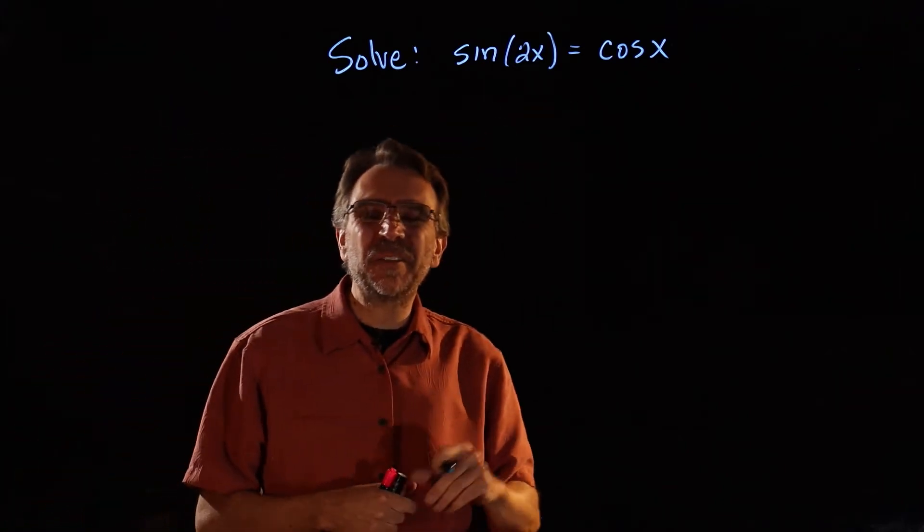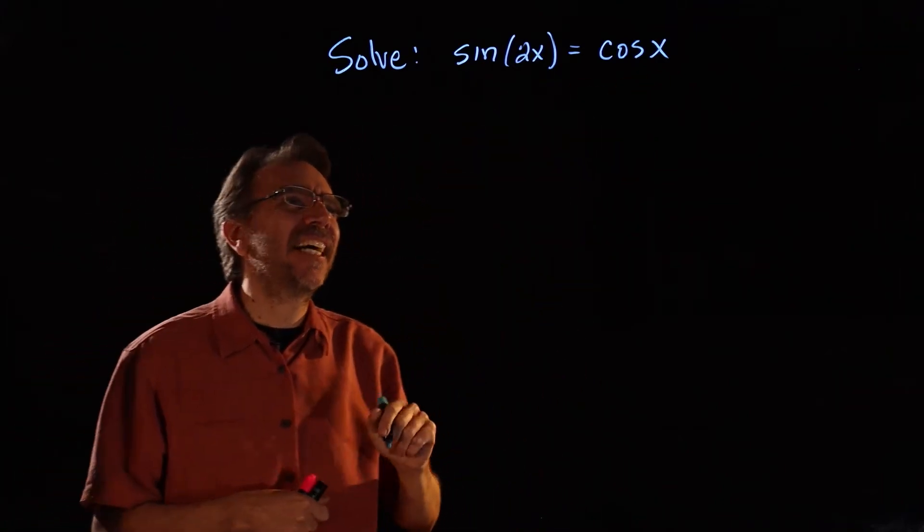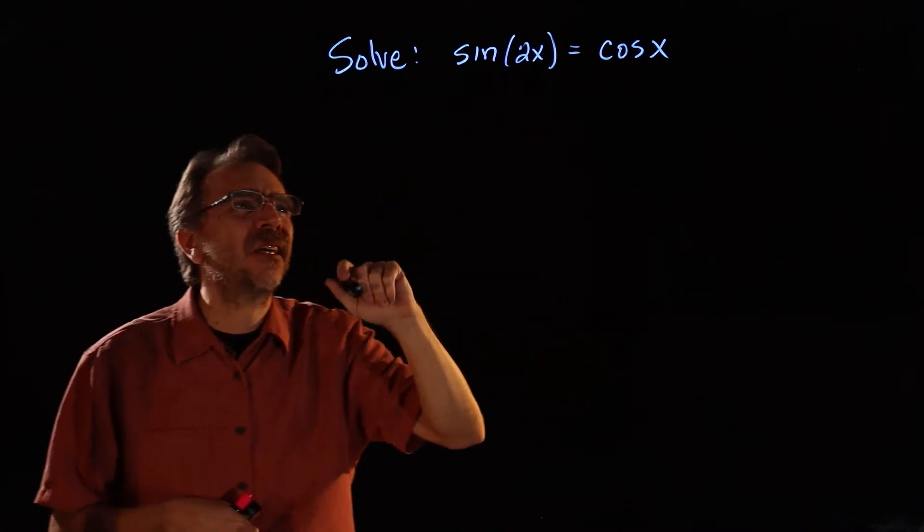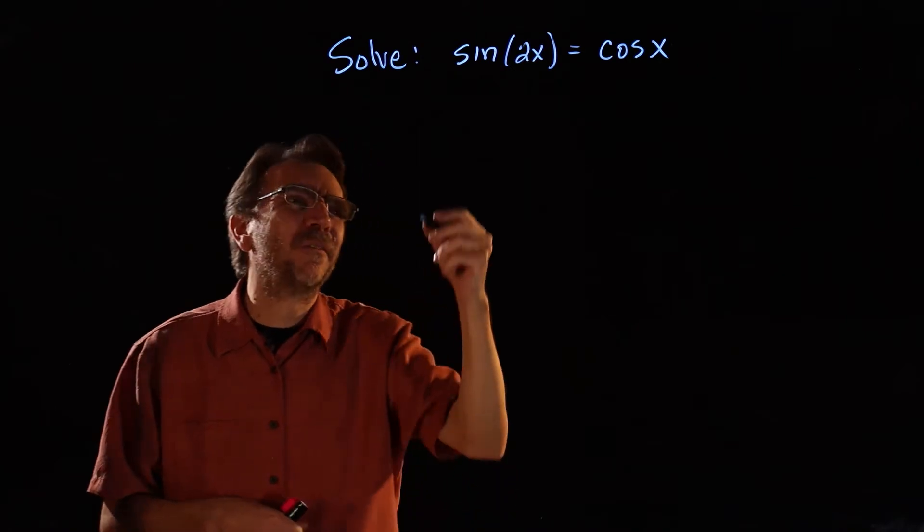All right, here we have to solve a trigonometric equation. I notice I have sine 2x on one side and cosine x on the other side, so I have a double angle. Now the first thing I'm going to do is just apply the double angle formula.